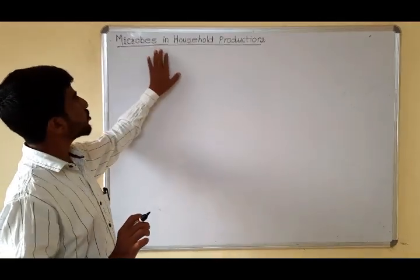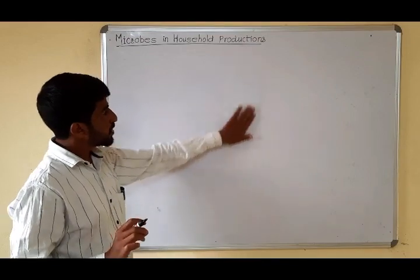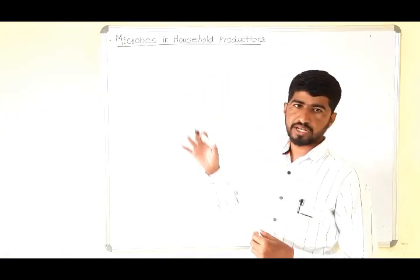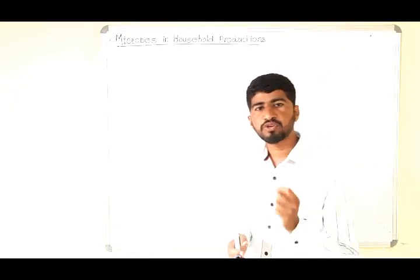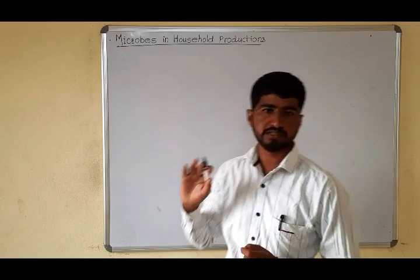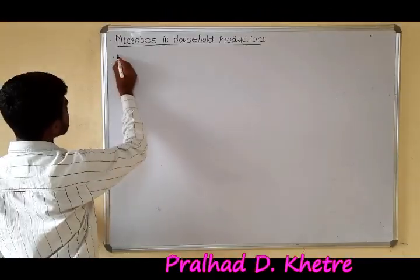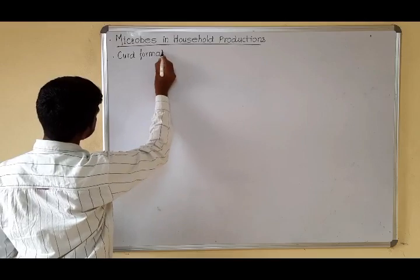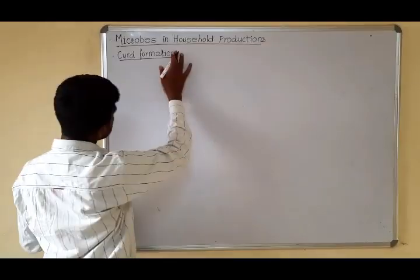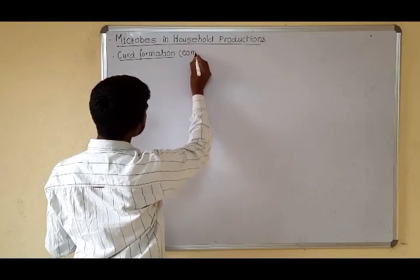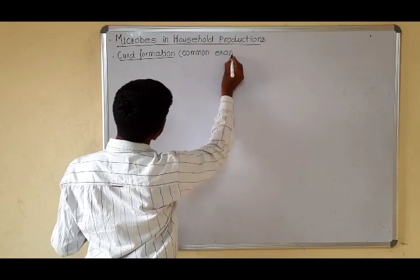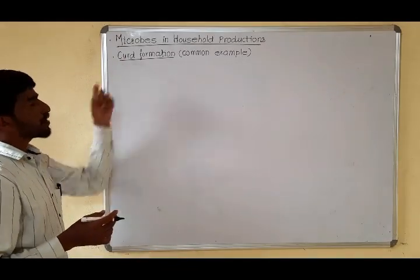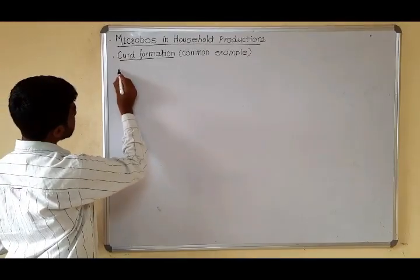Microbes in household productions: in day-to-day life we prepare different kinds of food materials using microorganisms. The most common type of food material prepared using microbes or microorganisms like bacteria is curd formation. Curd formation is the most common example of household production. Curd is a product prepared from milk.